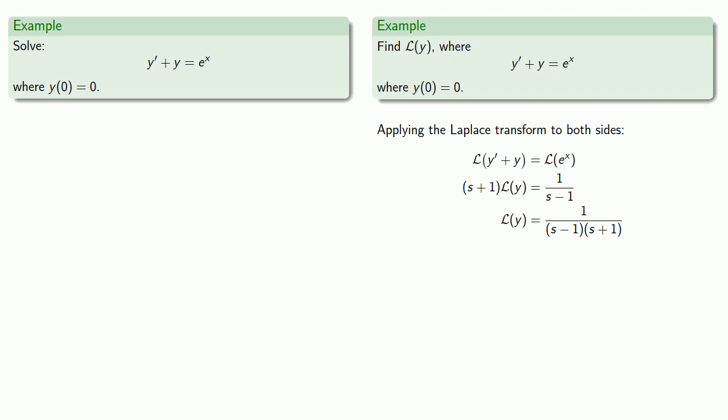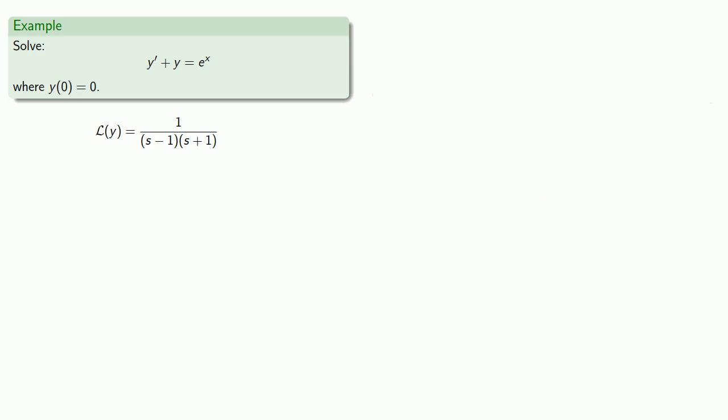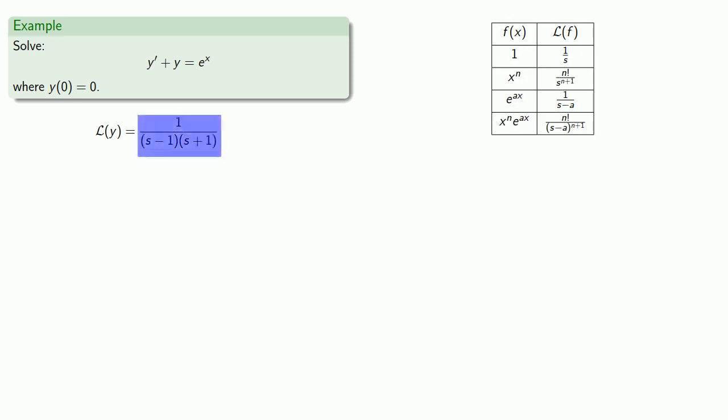So we have our Laplace transform. We'll pull in our library of Laplace transforms and look for one that's 1 over s minus 1 times s plus 1, and we find there isn't one.